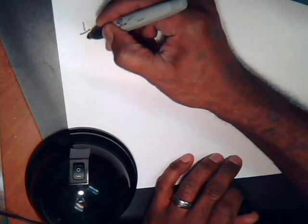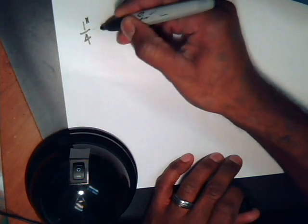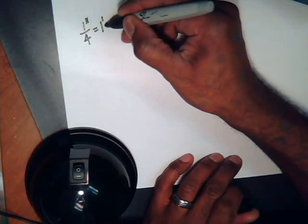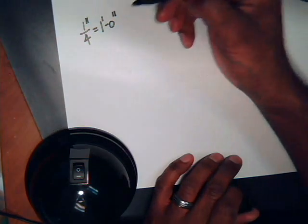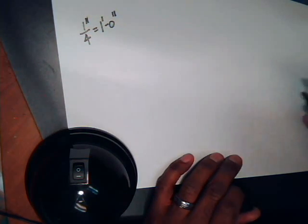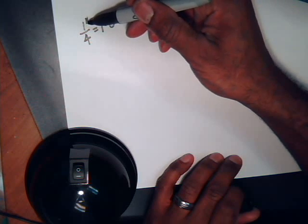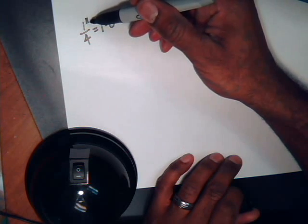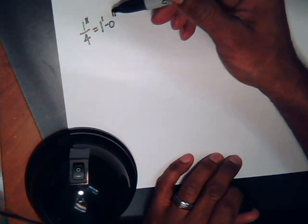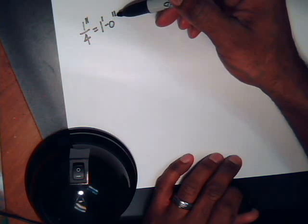All right, and what I'm going to do, make this a little bit bigger. One-fourth of an inch equals one foot zero inches. All right, those two dashes right there, that's a symbol for inches, that's a symbol for foot, and that's a symbol for inches right there.